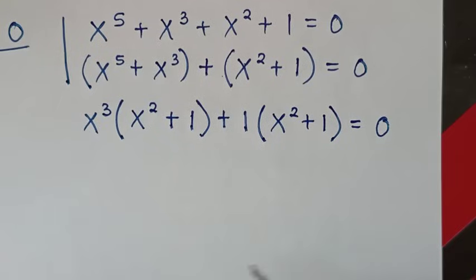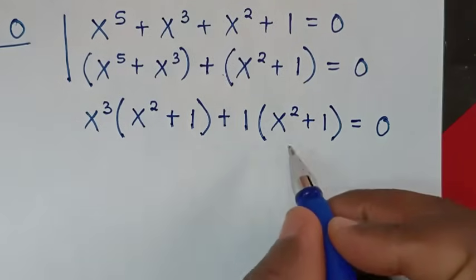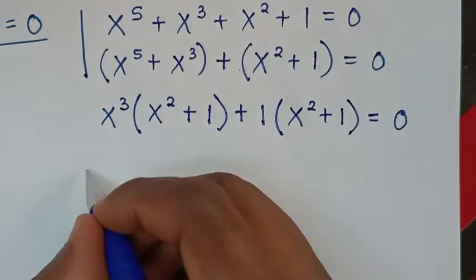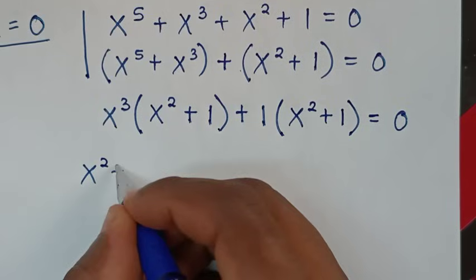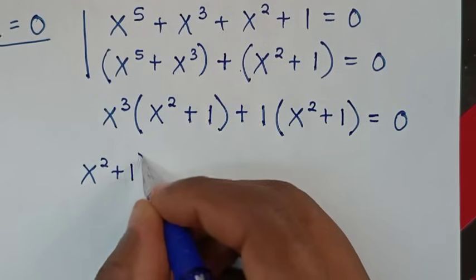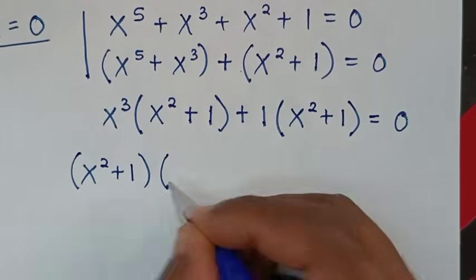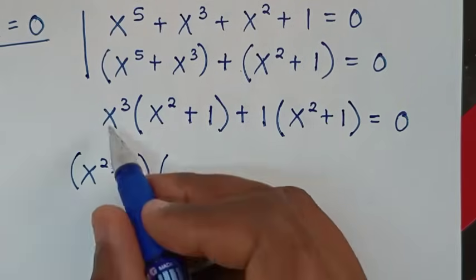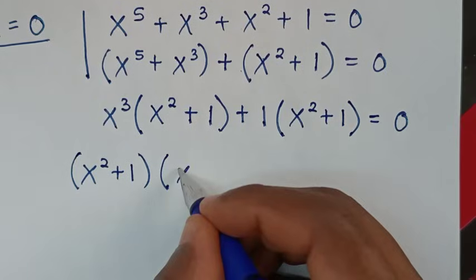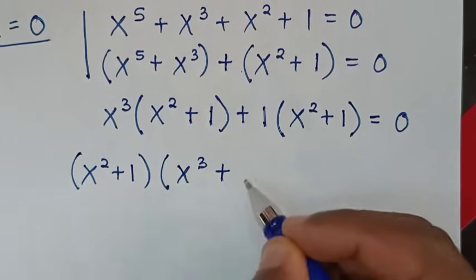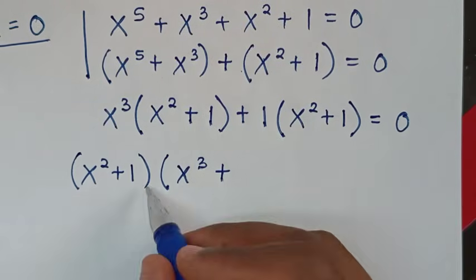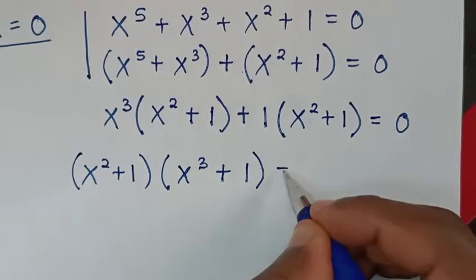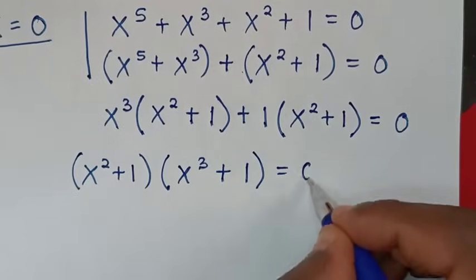Then from here, x squared plus 1 is common, so we'll take x squared plus 1 out of the bracket. This gives x power 3 plus 1, and the bracket x squared plus 1, all equal to 0.